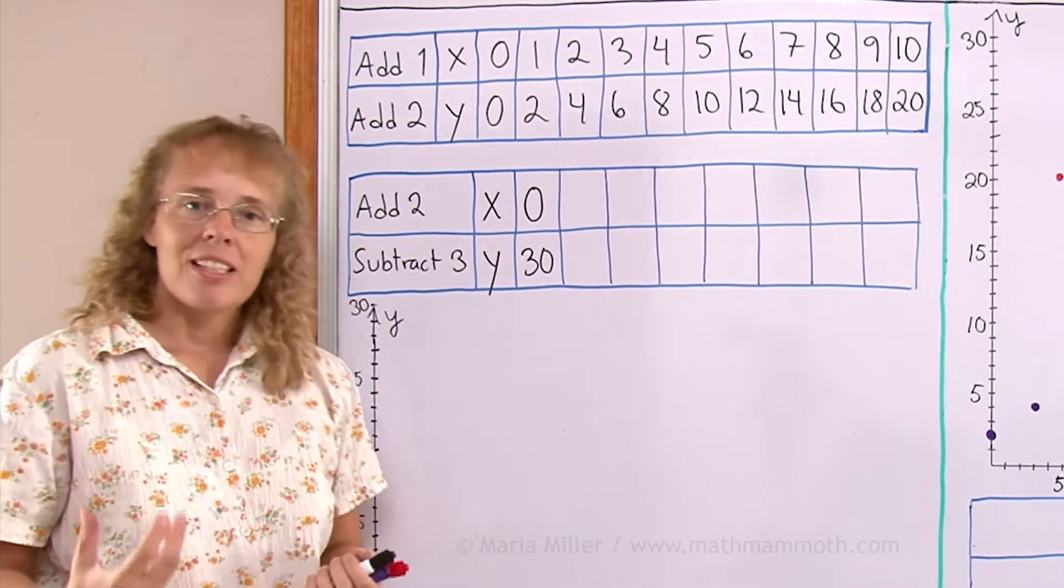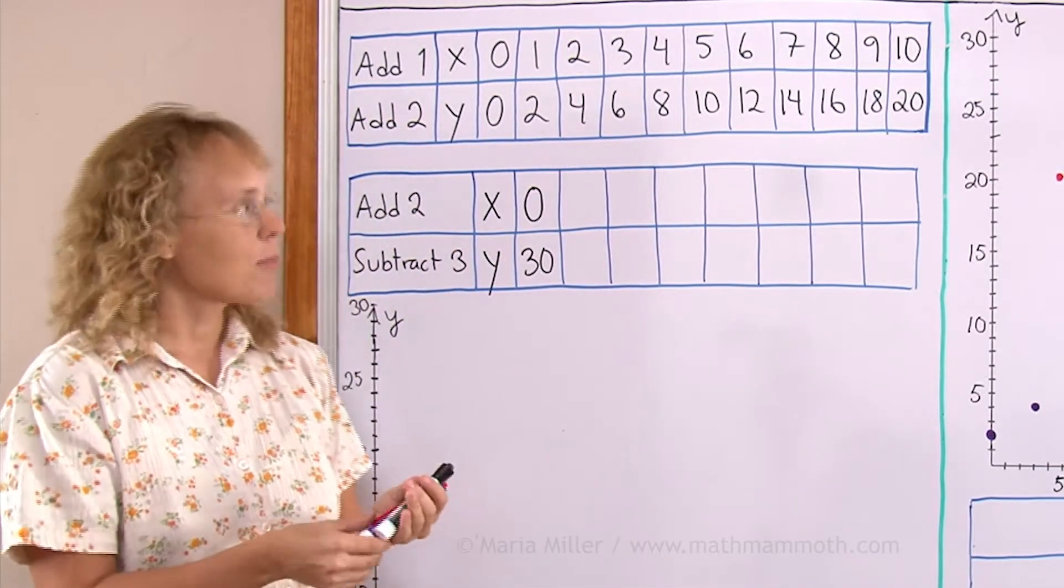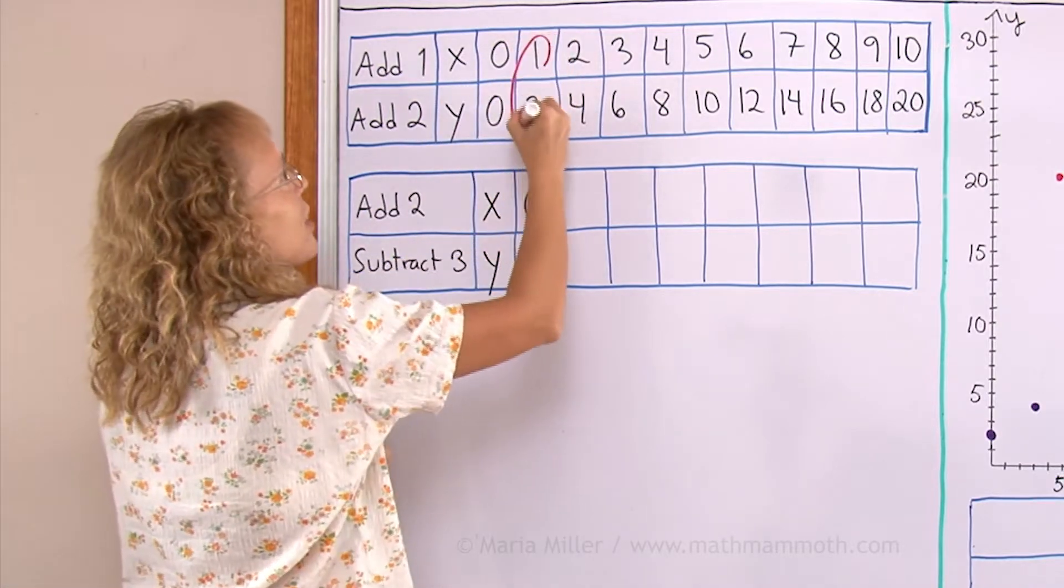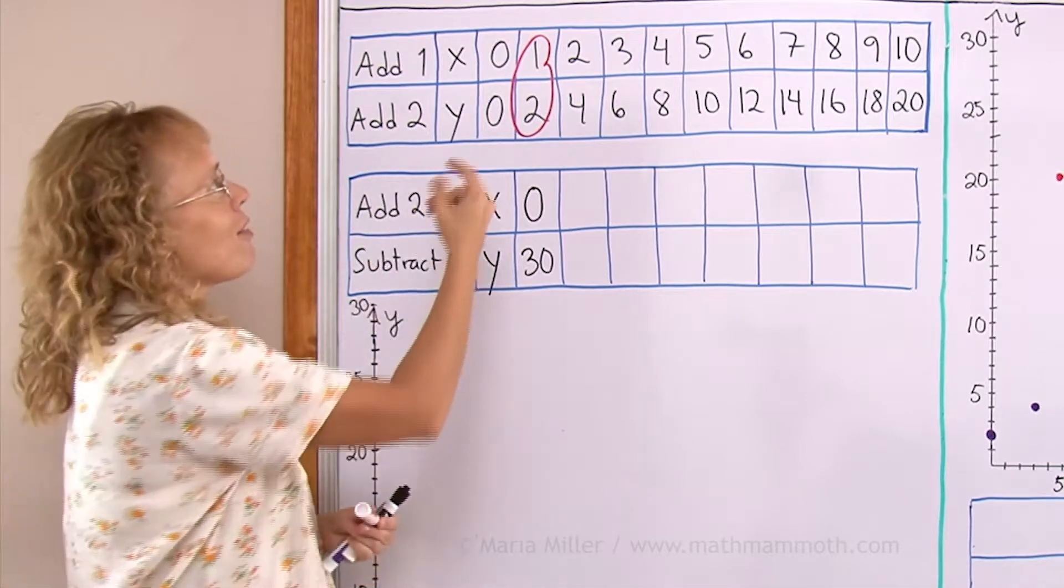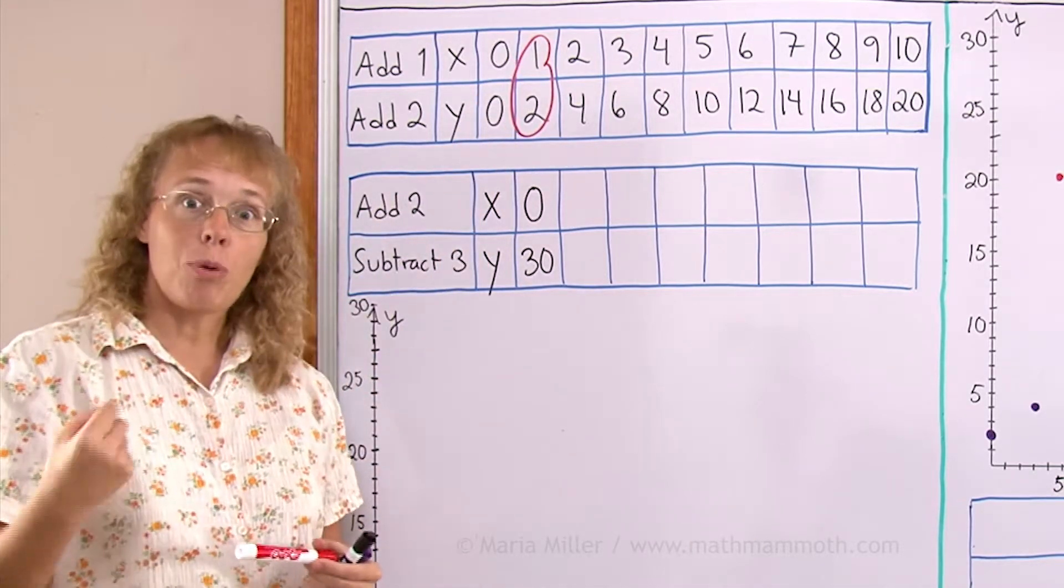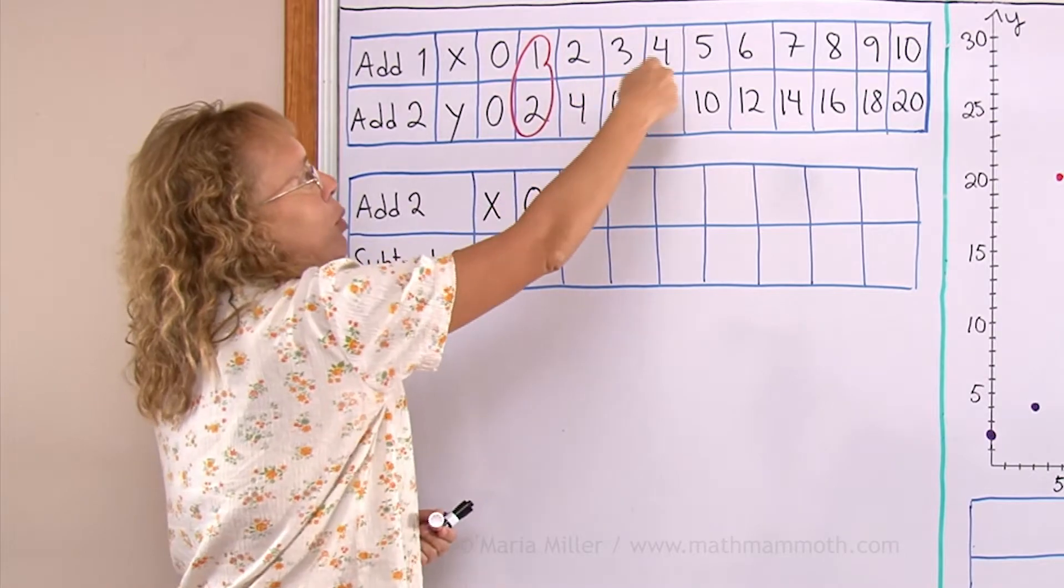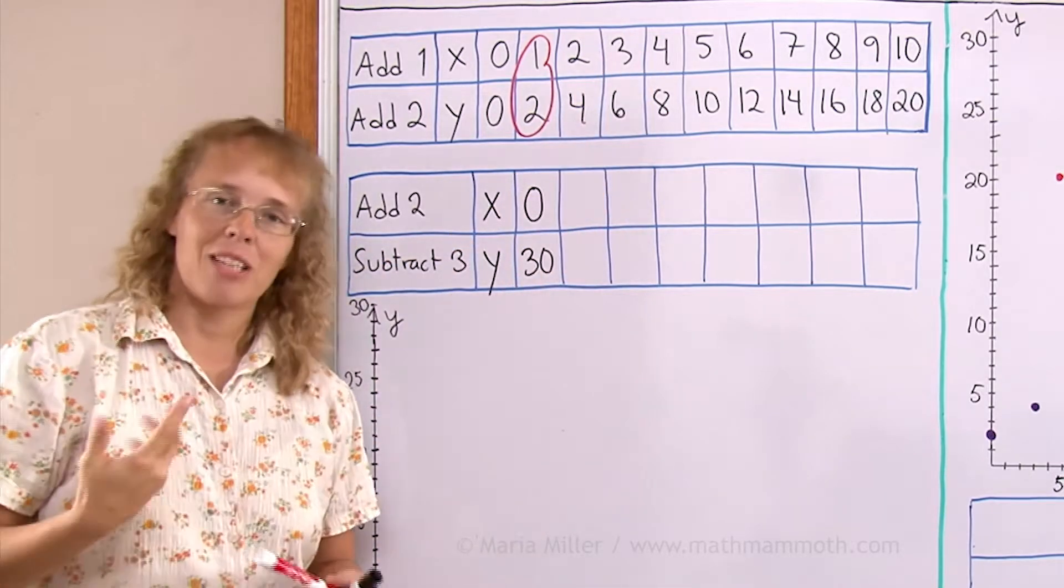Now we're going to look at these as ordered pairs because each one of these is a pair of two numbers. That means I can think of them as x and y coordinates of a point, and each one of these pairs is one point. I'll plot them and see what happens.